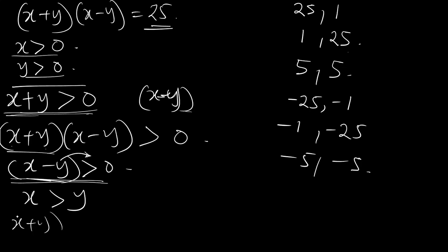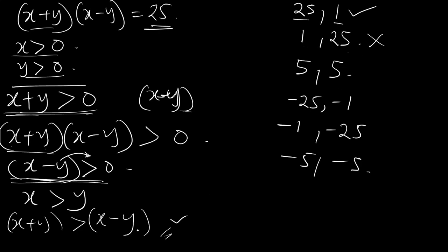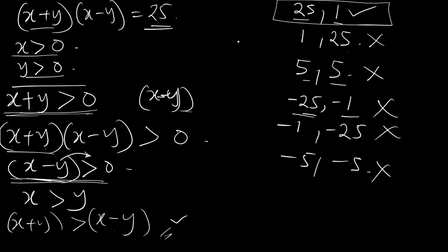Since X + Y must be greater than X − Y, the pair 25 and 1 works because 25 > 1. The pair 1 and 25 does not work because X + Y would be less than X − Y. The pairs 5 and 5 don't work because they are equal. The negative pairs don't work because X + Y must be greater than zero. So the only valid pair is 25 × 1.